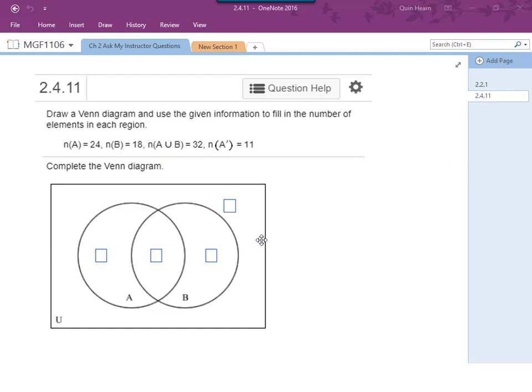Hi, I'm Ms. Hearn. Let's get started. In this video we're going to talk about how to determine the cardinalities of the regions in a two-set Venn diagram.